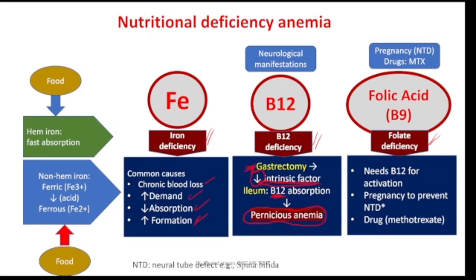The third type is folate deficiency anemia — B9 — mainly related to deficiency of folic acid and most commonly seen during pregnancy. If a pregnant woman suffers from folic acid deficiency, the baby may suffer from neural tube defects (NTD) such as spina bifida. This deficiency can also be related to methotrexate use.